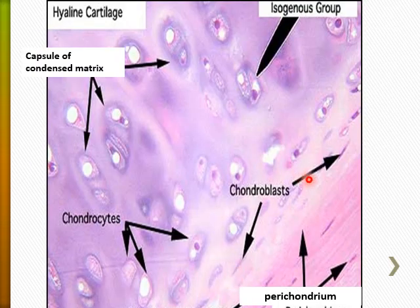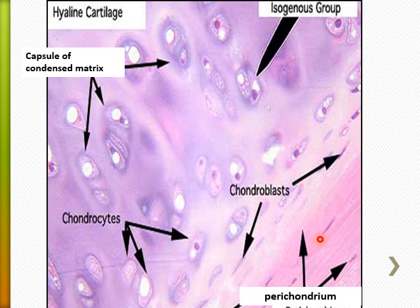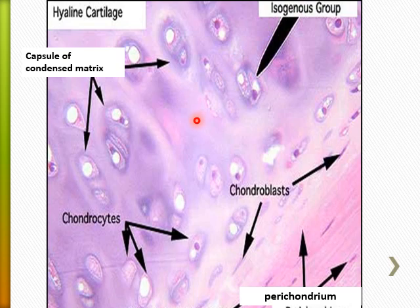At higher magnification, the hyaline cartilage is again surrounded with the perichondrium, formed of the outer fibrous layer and inner chondrogenic layer. Here are the chondroblasts, chondrocytes, and the chondrocyte inside a lacuna, dividing two to four or eight times, forming what's called a cell nest or isogenous group.